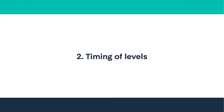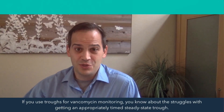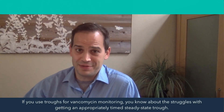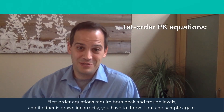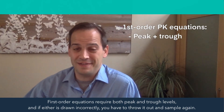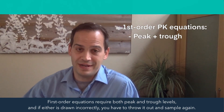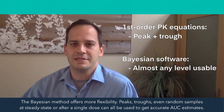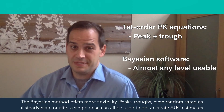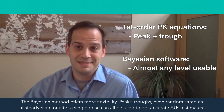2. Timing of vancomycin levels. If you use troughs for vancomycin monitoring, you know about the struggles with getting an appropriately timed steady-state trough. Well, with first-order pK equations, it's basically double. First-order equations require both peak and trough levels, and if either is drawn incorrectly, you have to throw it out and sample again. The Bayesian method offers more flexibility — peaks, troughs, even random samples at steady-state or after a single dose can all be used to get accurate AUC estimates.